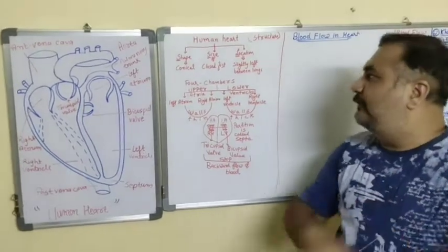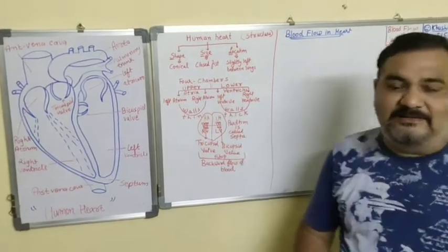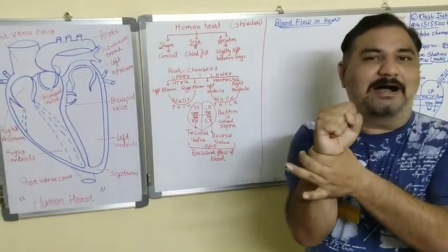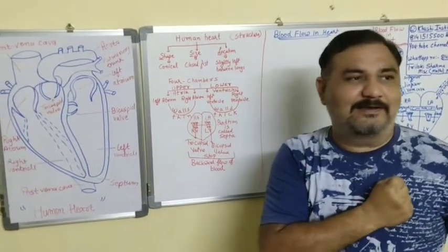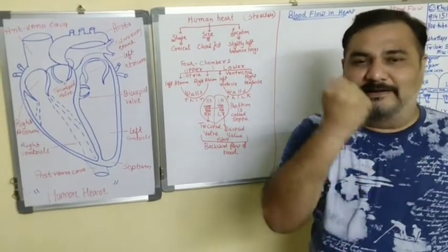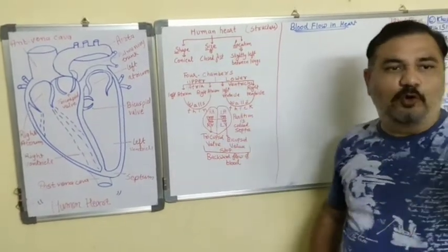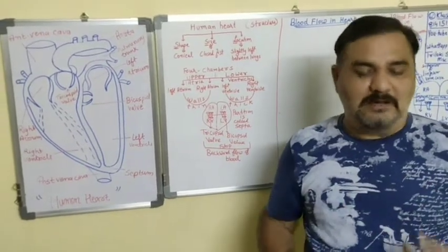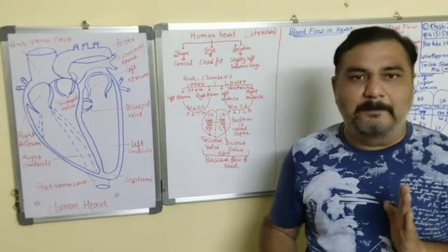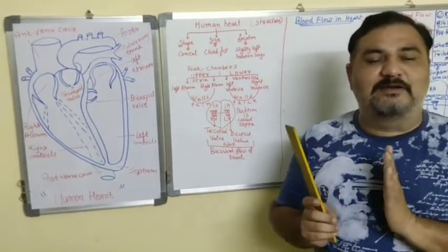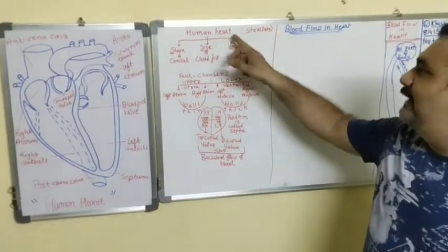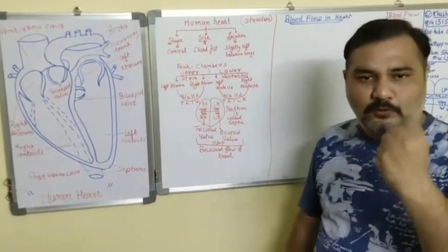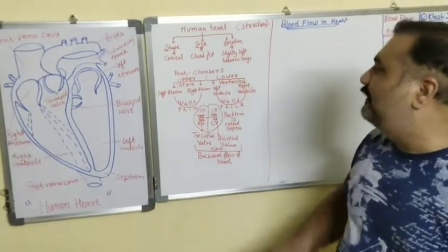The size of the heart is the size of a closed fist. Third, location: the heart is slightly left between the lungs. It is not exactly between the lungs, which is why we use the word 'slightly left.' So to summarize the first three things: shape - human heart is conical; size - closed fist; location - slightly left between the lungs.